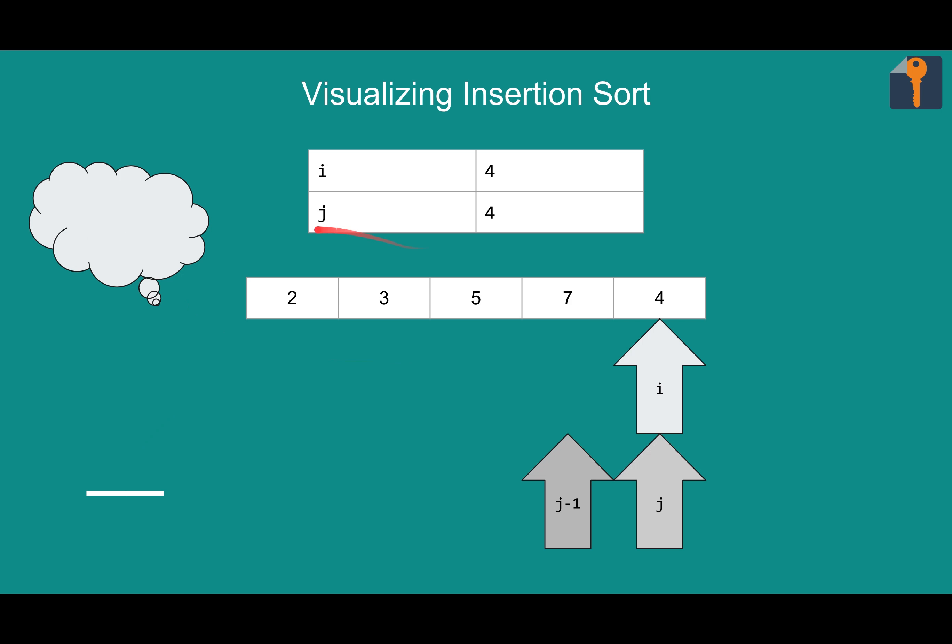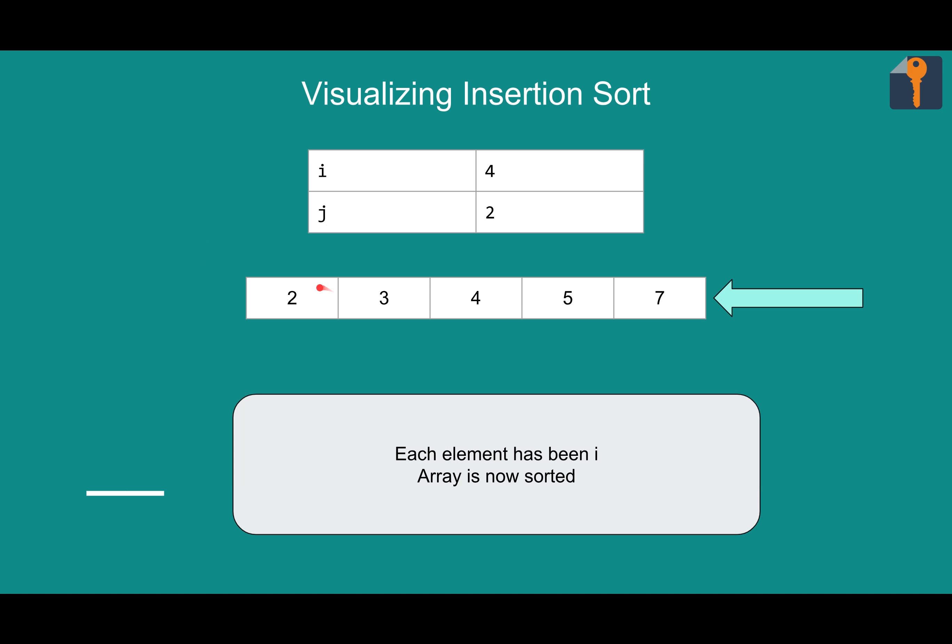We'll move i up one. Now our sorted part is two, three, five, and seven. And we need to find four's place. Comparing four to the previous element. Is seven greater than four? It is. We need to swap. And now we'll move j down by one, following four along the way. And we'll compare five and four. Five is also greater than four, which means four has to continue moving downward. We swap it out. And now is three greater than four? It is not. So we're going to break. Now that we've gone from i equals one all the way to the end of the array, everything is sorted.